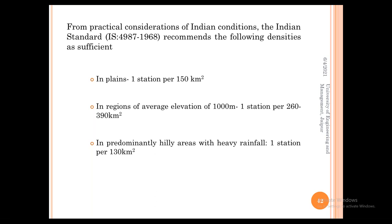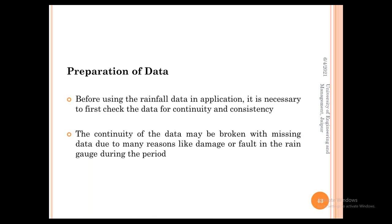For Indian conditions, IS Code 4987:1968 recommends the following densities: in plains, 1 station per 150 km²; in regions of average elevation of 1000 m, 1 station per 260–390 km²; and in predominantly hilly areas with heavy rainfall, 1 station per 130 km².